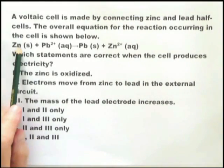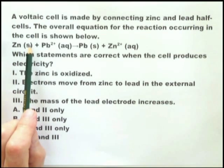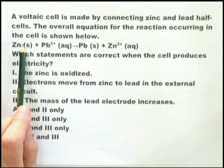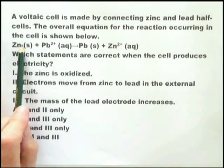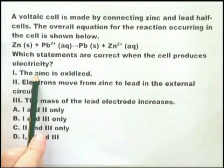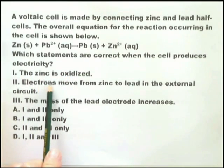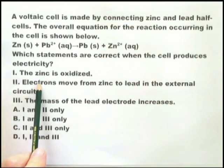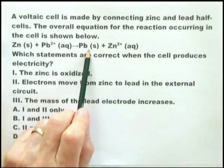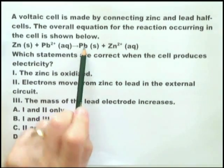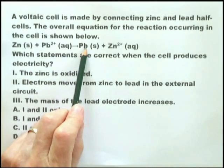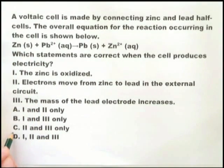Whether or not you remember that zinc is more reactive than lead, the equation tells you that zinc metal is the one that loses electrons to form zinc ions. Therefore, zinc metal becomes the negative electrode and lead becomes the positive electrode. If zinc metal goes to zinc ions, it is oxidized — so statement one is correct. 'Electrons move from zinc to lead in the external circuit' — yes, that's true. 'The mass of the lead electrode increases' — yes, because the Pb²⁺ ions are receiving electrons and going to the lead electrode. The equation tells you everything — all three are correct.